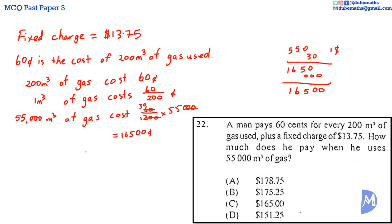There are 100 cents in $1. So dividing by 100, move the decimal point two spaces to the left: $165. Adding the fixed charge: $165 added to $13.75 equals $178.75. The answer is A.